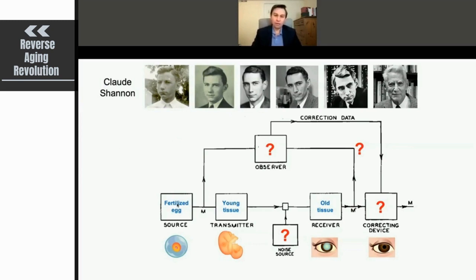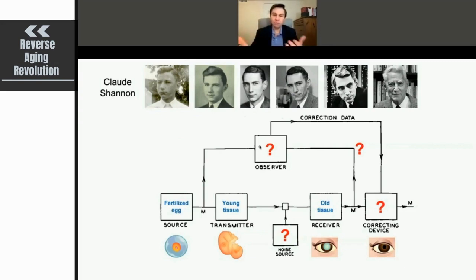In this diagram — the black part is pulled straight out of his paper from 1948 — he said that you can have a transmitter and a receiver, and there will always be noise, whether it's background radiation or something. But the problem is, how do you have a perfect transmission? He proposed that there would be this observer — we now call it the backup copy or the TCP/IP protocol of the internet. He was the first to show, mathematically at least, that you could use a backup copy to reconstitute the original message.